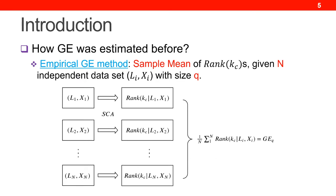Before our proposed GEA algorithm, GE was estimated empirically. In this case, the evaluator needs to collect a fairly large and independent dataset with equal size, attack N times, then estimate GE by the sample mean of the correct key ranks from all these datasets. Notice that GE changes with the size Q, which is the number of traces used in one attack. Usually more traces results in better attacks, so GE is smaller. To decide GE at a specific Q, one dataset of size Q does not give a reliable answer.